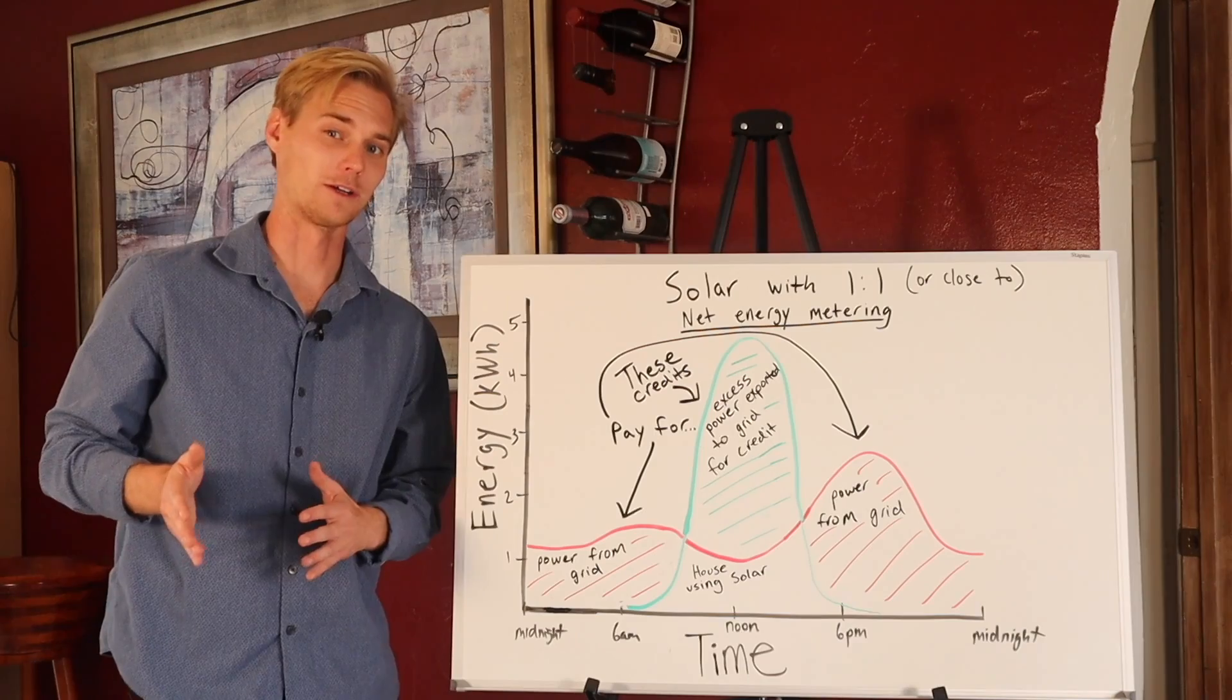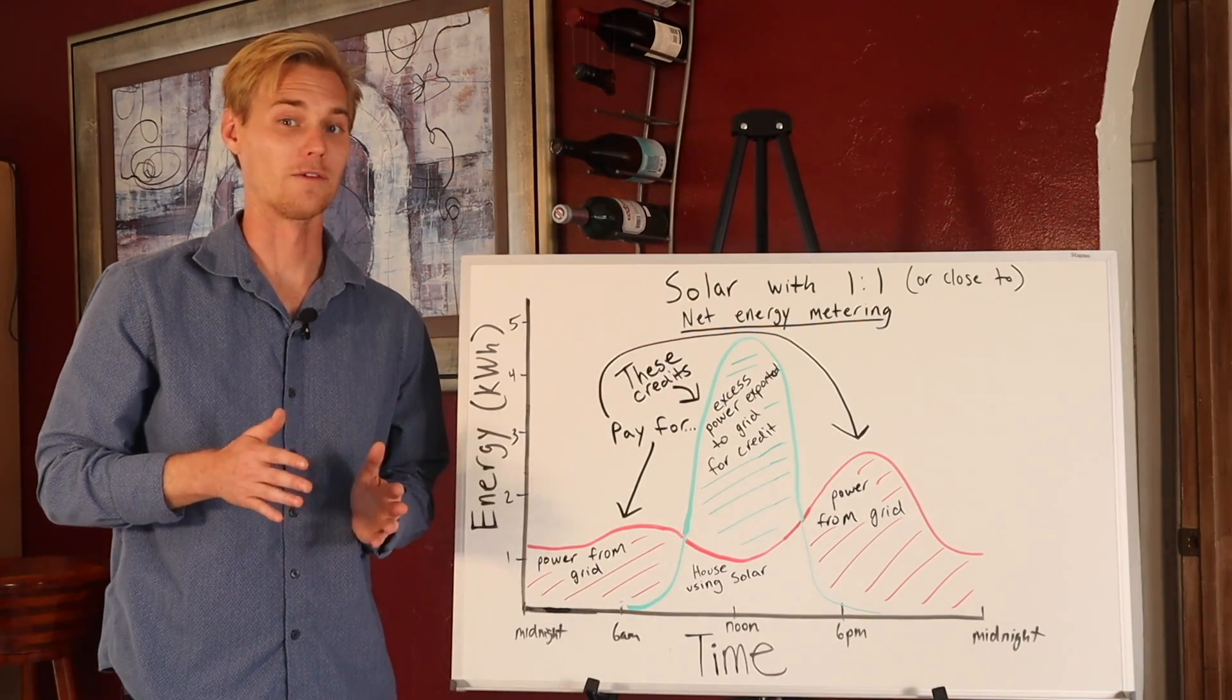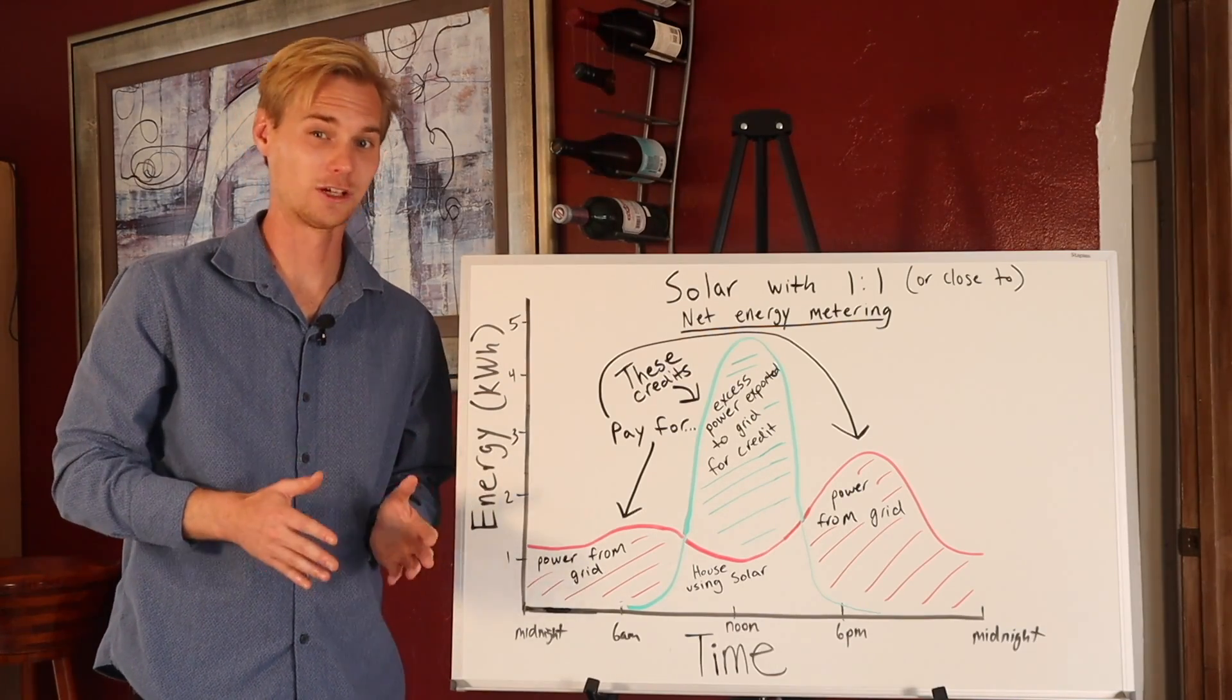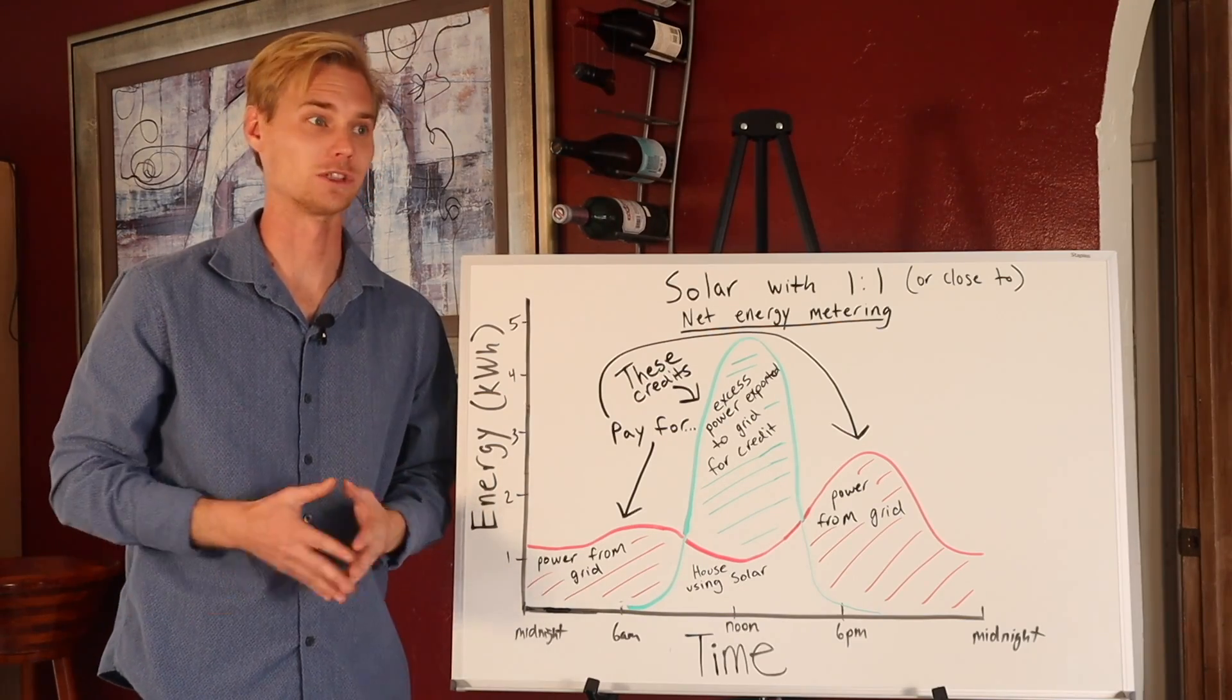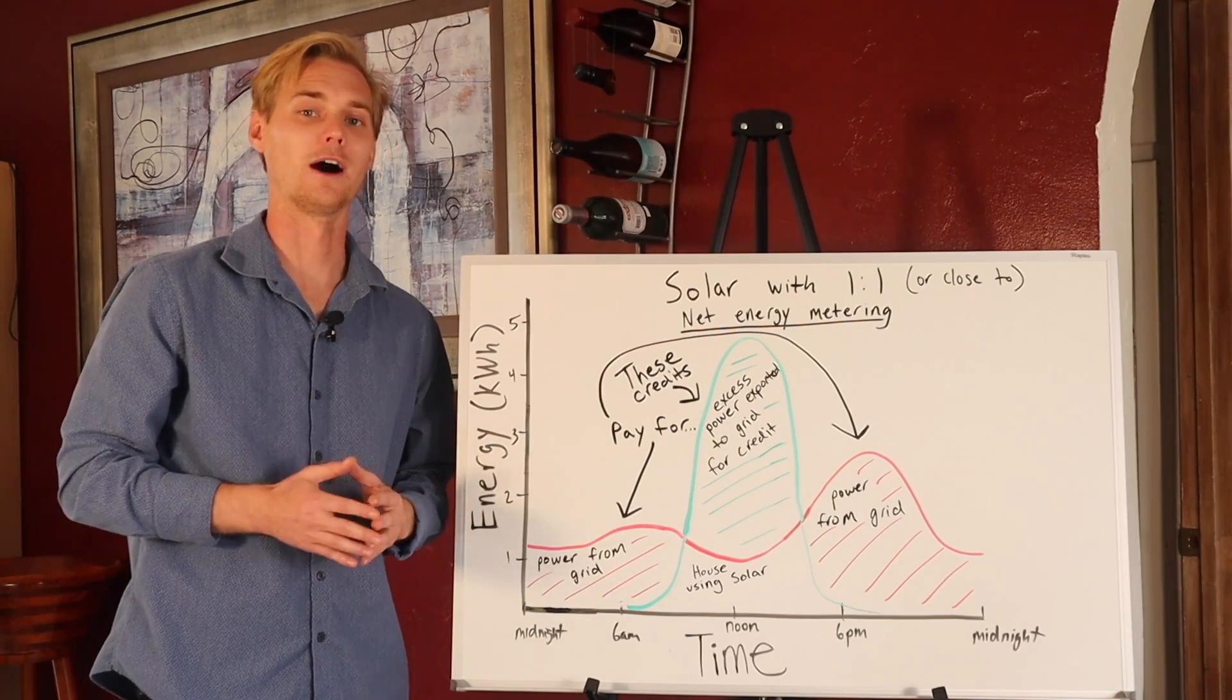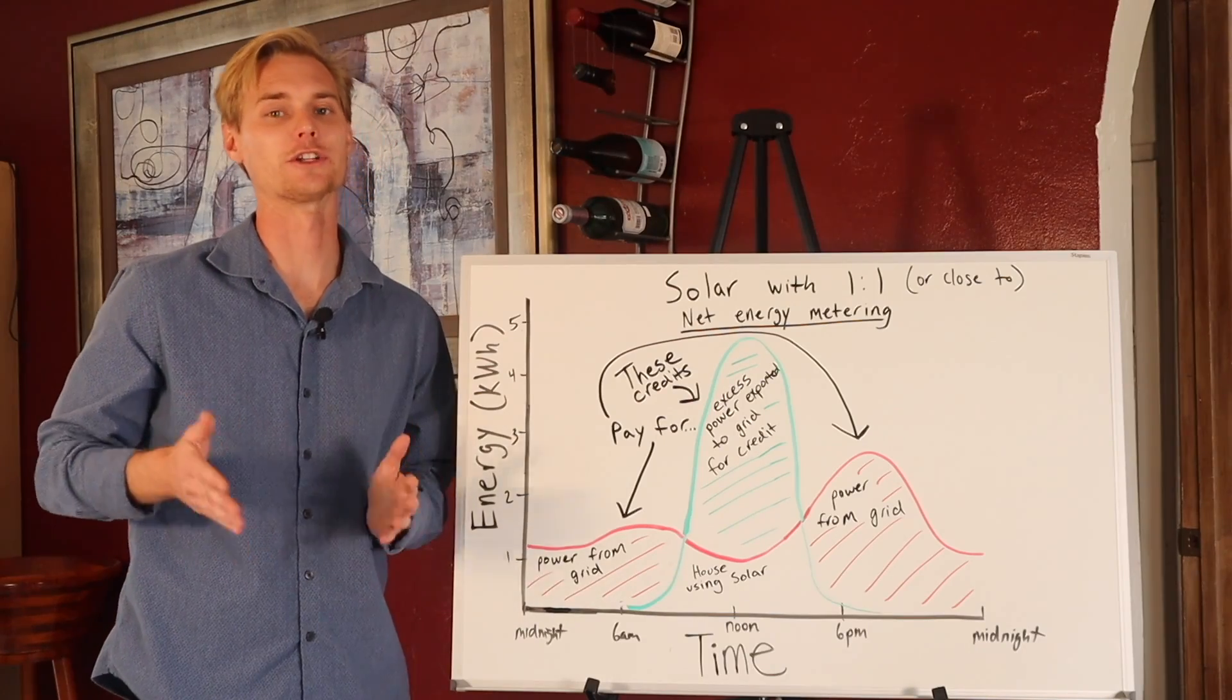There are a lot of markets with utility companies that don't exactly offer very good net metering. California being 50% of the nation's solar market, and they just pretty much slashed the net metering incentives. Now, net metering isn't everything. A good net metering program will help the payback period go down, but in California, for example, it still makes sense. It's just not as good.